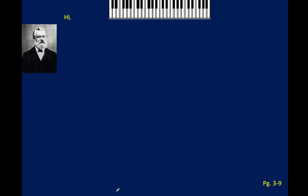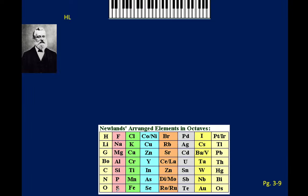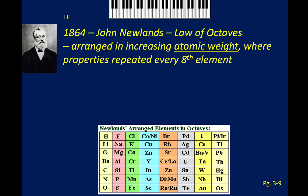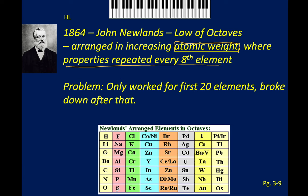The next scientist is John Newlands, who came up with the law of octaves. Because he related it to music, he wasn't taken seriously — but again he had the right idea. He organized elements by increasing atomic weight, arranging them so that their properties repeat every eighth element. It only worked for the first 20 elements and broke down after that, because transition metals didn't have their own block and noble gases were missing.